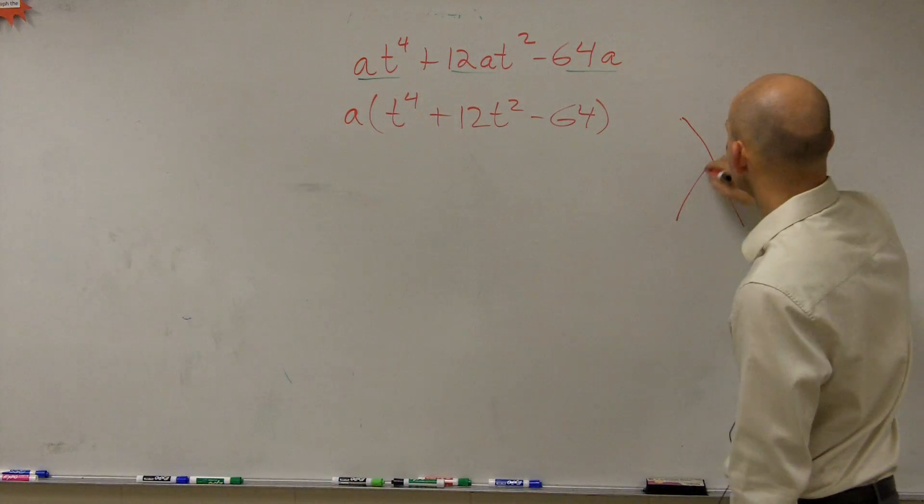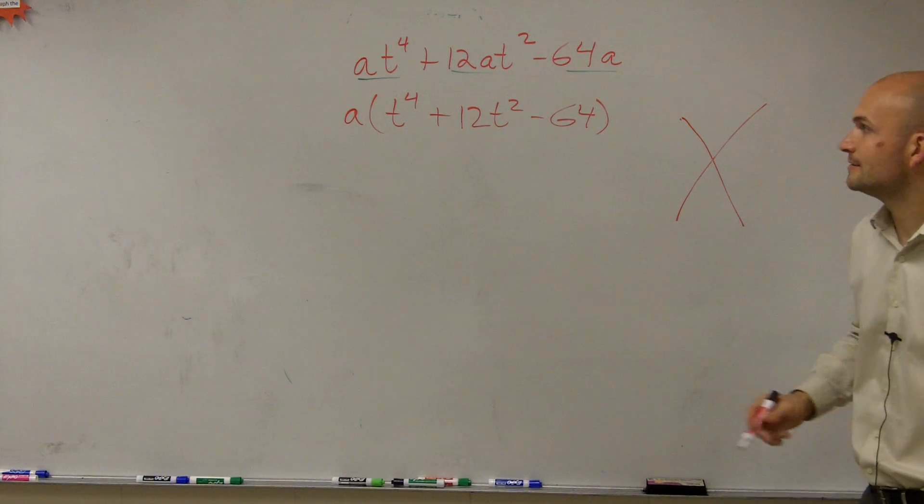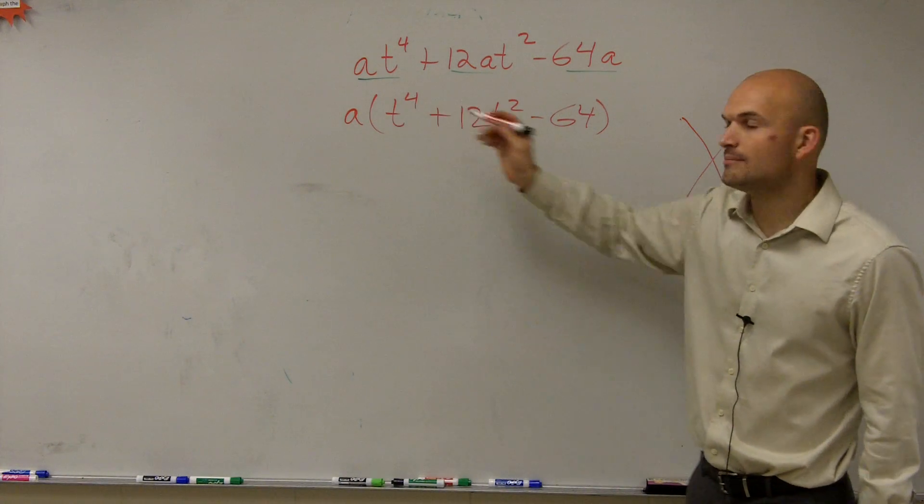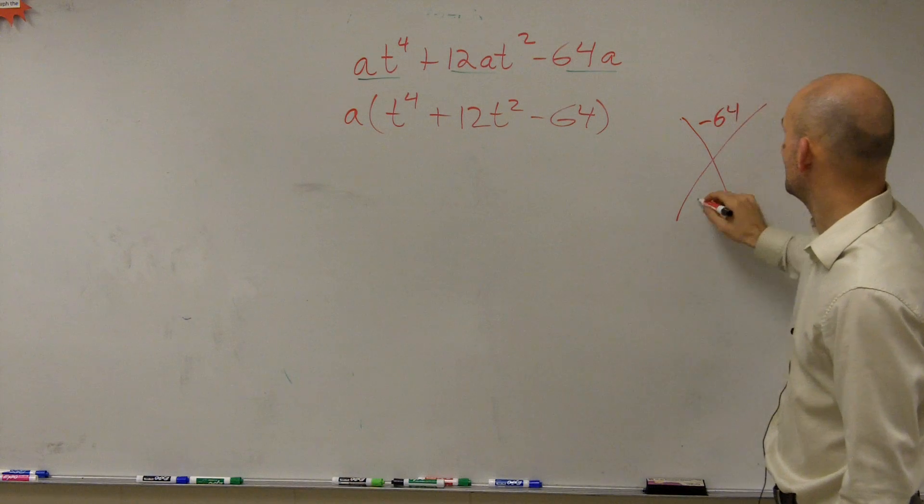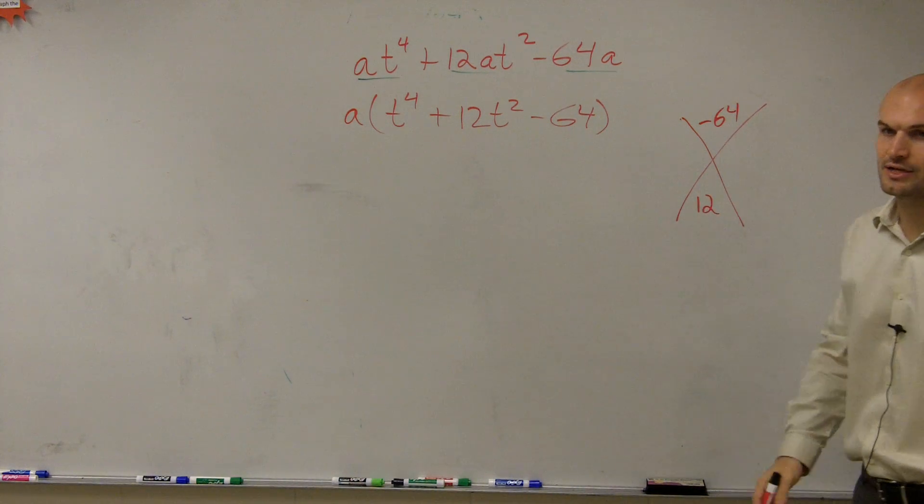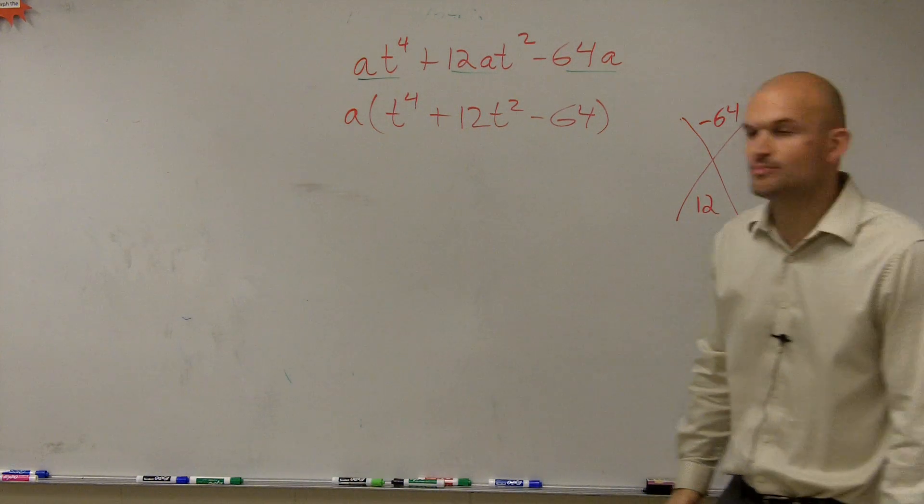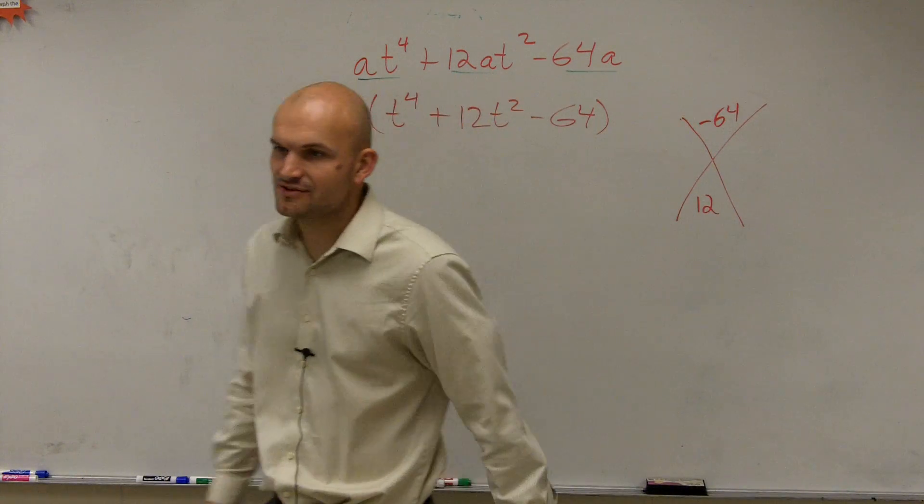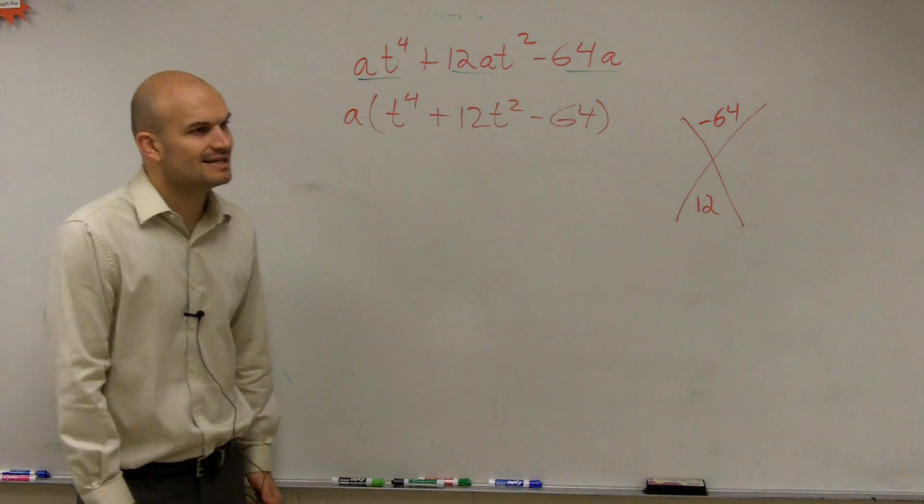So I have my one, so negative 64, and then 12. So now I need to look into what two numbers multiply to give me negative 64 but then add to give me 12.